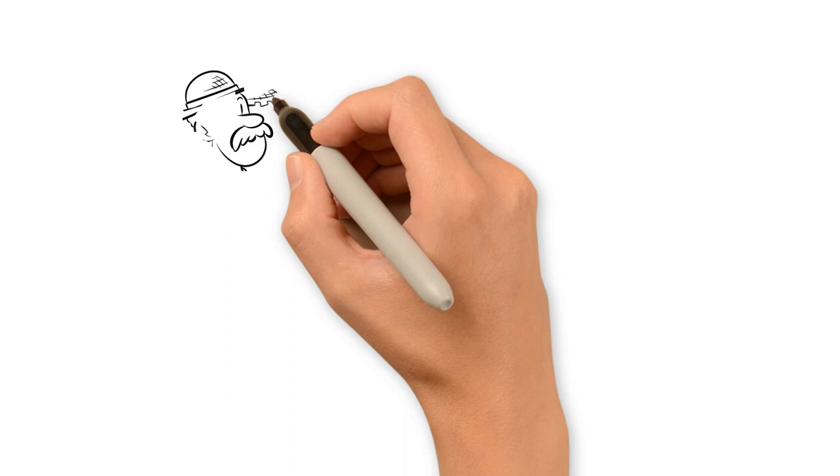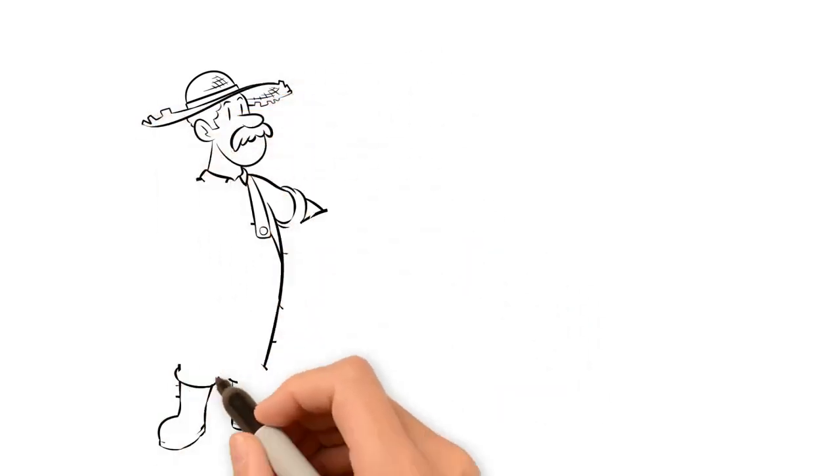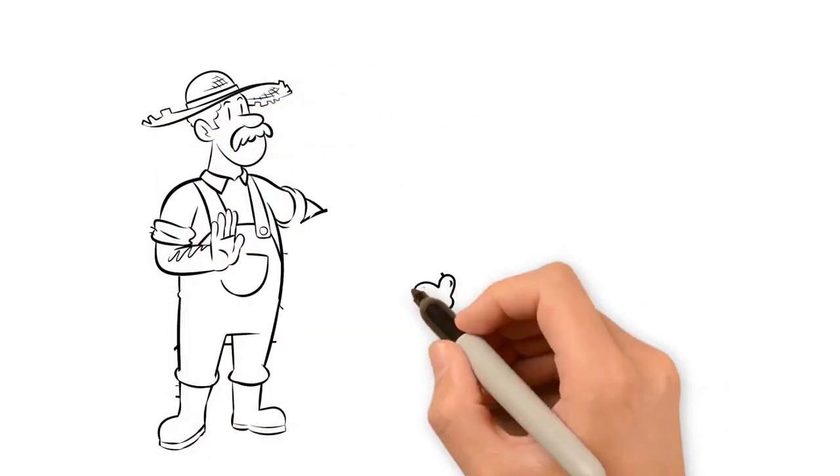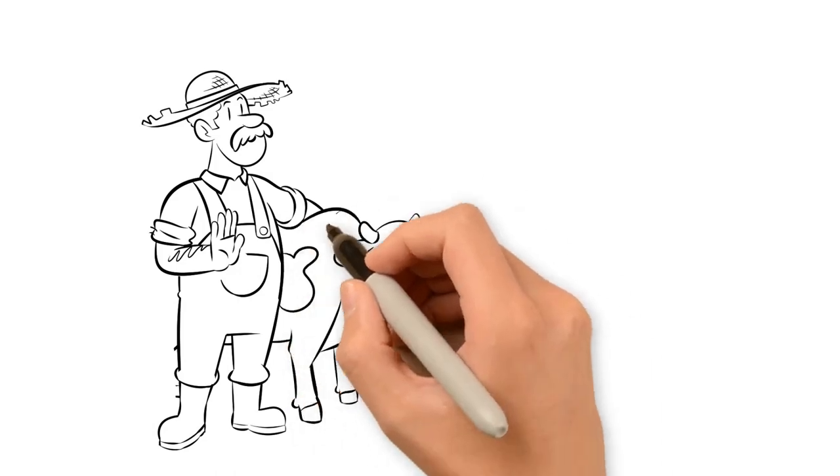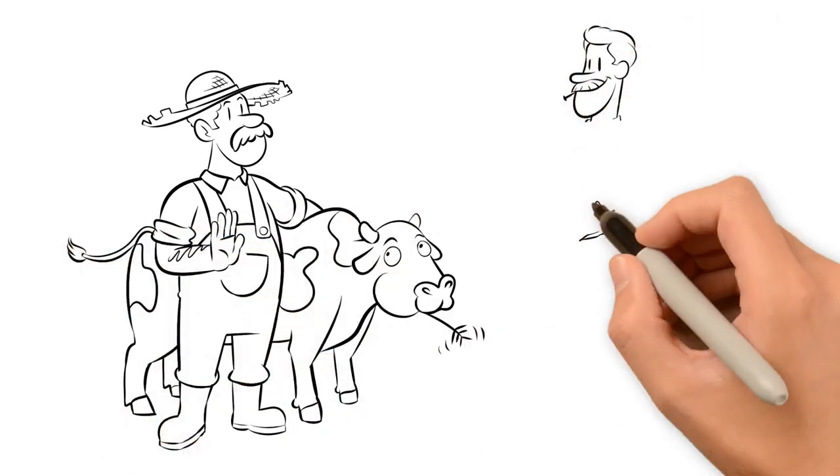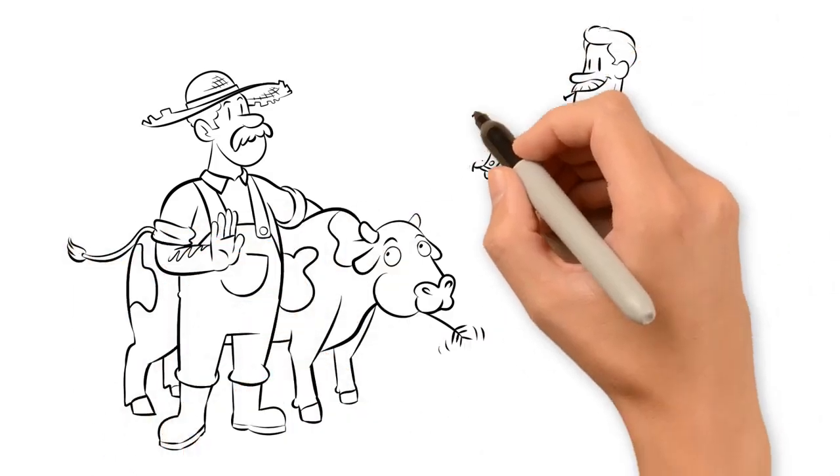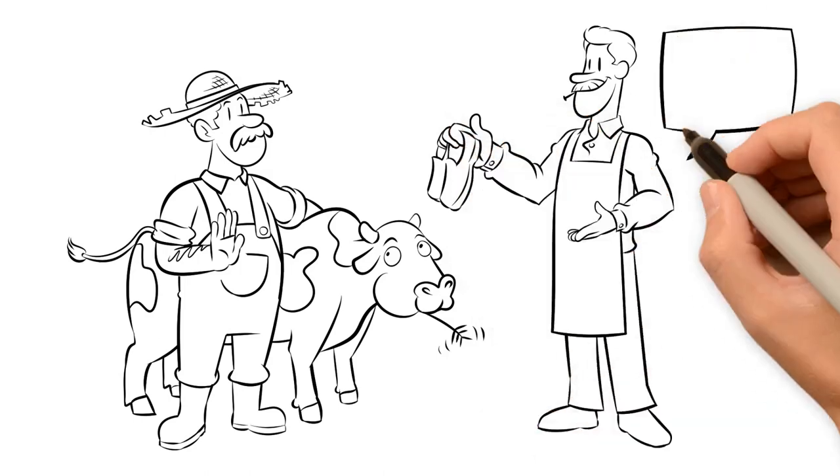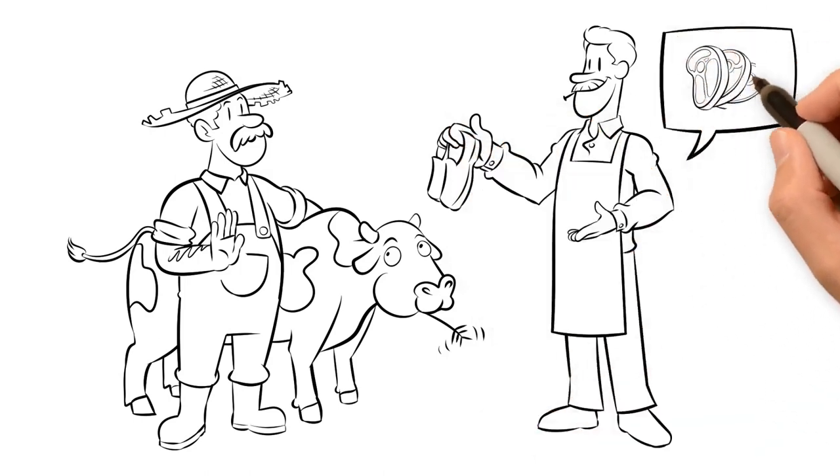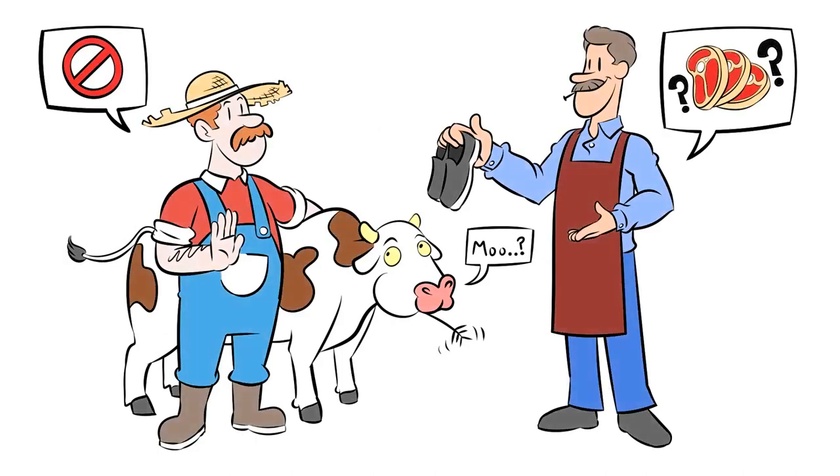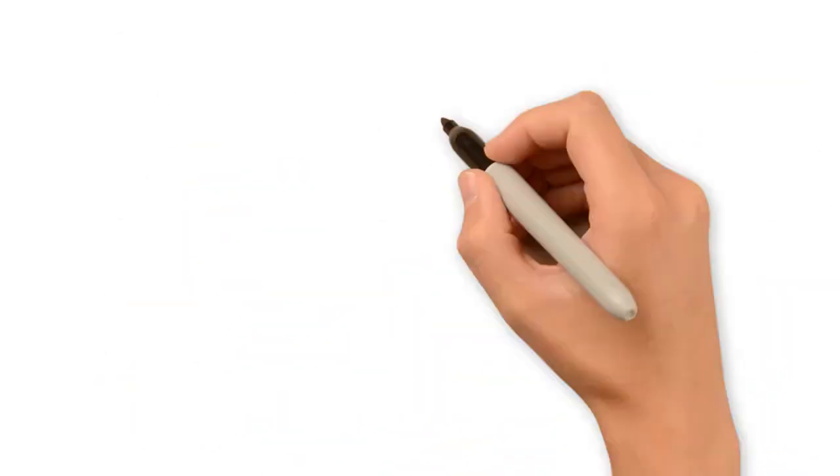A barter system has two basic problems: indivisibility and lack of coincidence of wants. Imagine that a farmer wants to buy a pair of shoes, but the cobbler does not want eggs. He may want beef, but the farmer is not willing to slaughter his cow for shoes. A trade where both are happy is now difficult. Any sort of advanced economy is impossible with simple direct exchange.